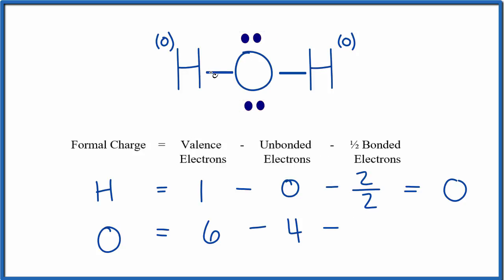And then bonded, it has 2 plus 2, it has 4. So we'll put 4 over 2, and we have 6 minus 4 is 2, minus 4 over 2, 2 minus 2 is 0.